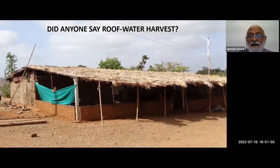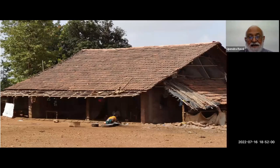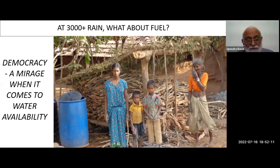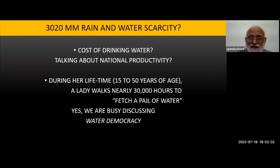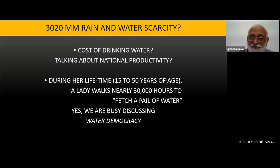This is rural India. When we talk about rooftop harvest, we take it for granted that we have a regular RCC terrace — this is that. The rooftop extension is at least five feet away from the brick pillars. During the monsoon they have to collect their fuel — three to four months of fuel — they have to cover it. Can we cost drinking water? We talk about water democracy — women have to walk nearly 30,000 hours.